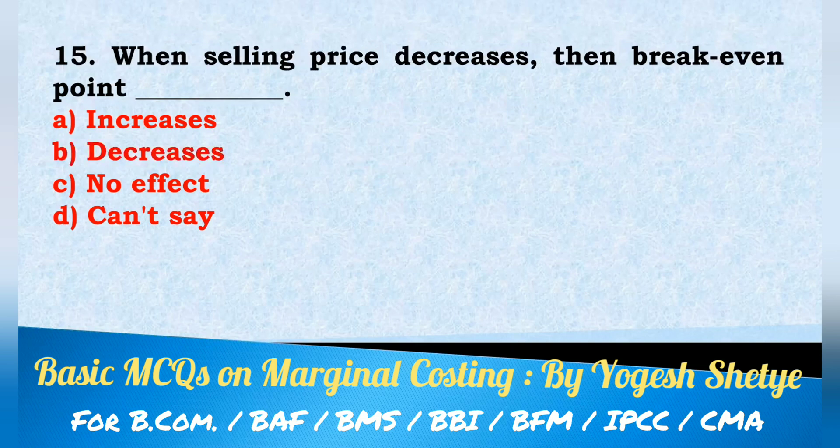Question 15: When selling price decreases, then break-even point — increases; decreases; no effect; can't say. Answer: when selling price decreases, break-even point increases. Answer A.